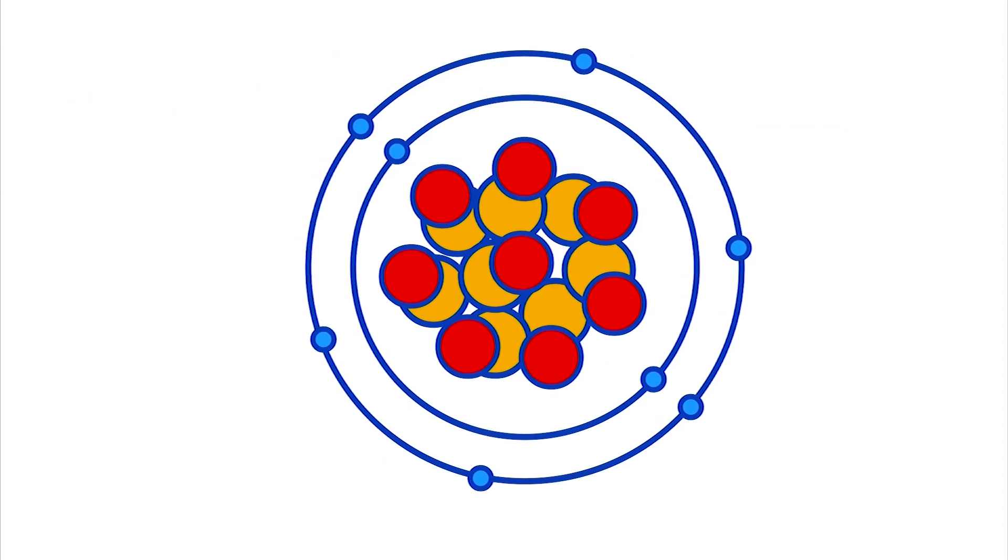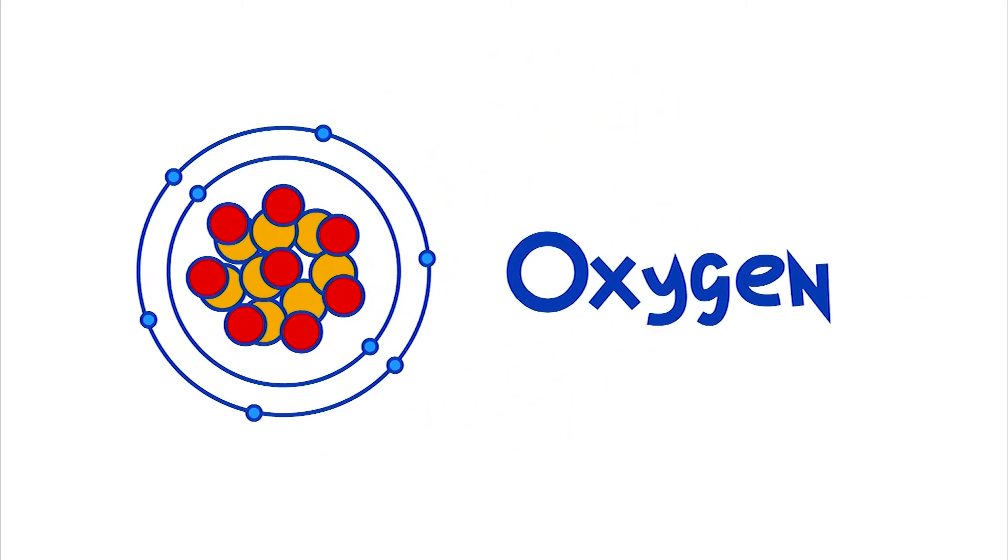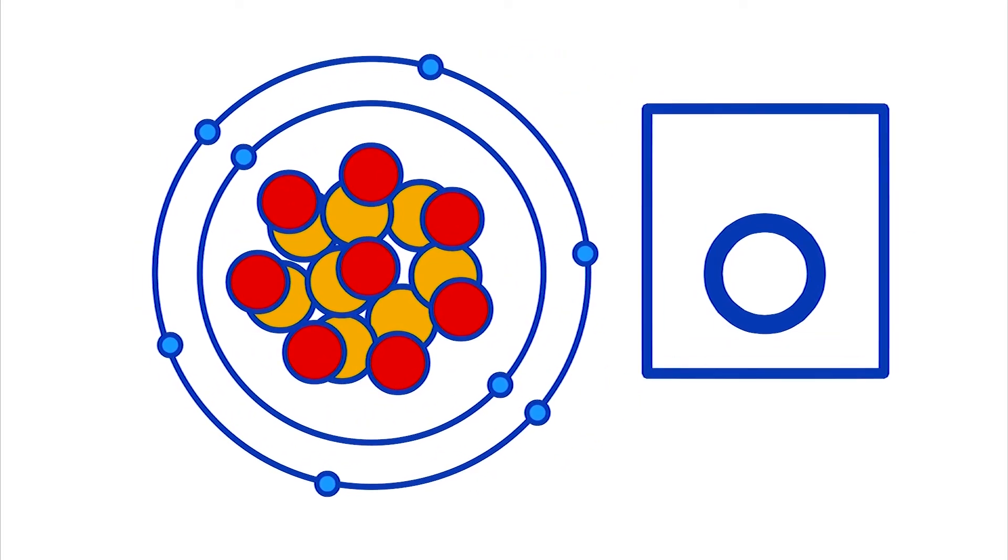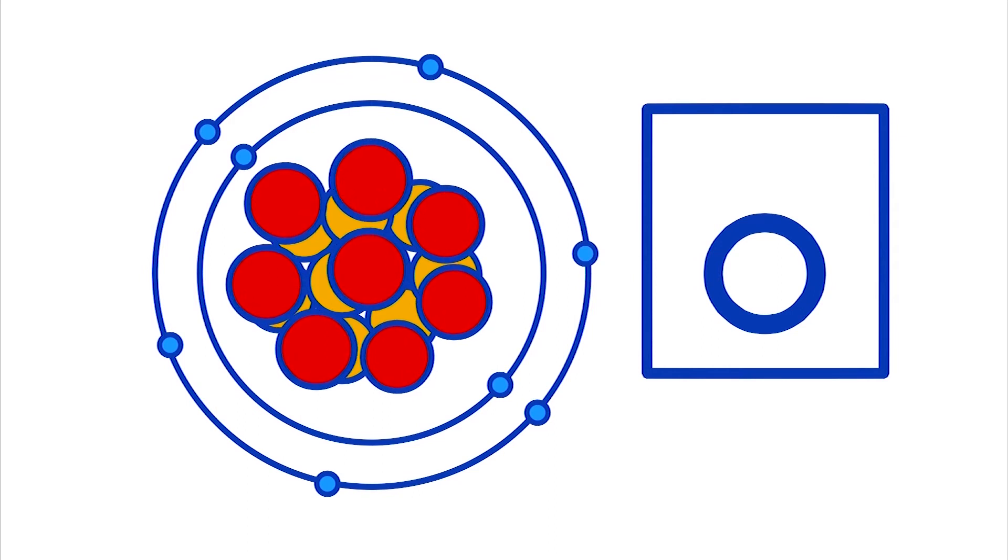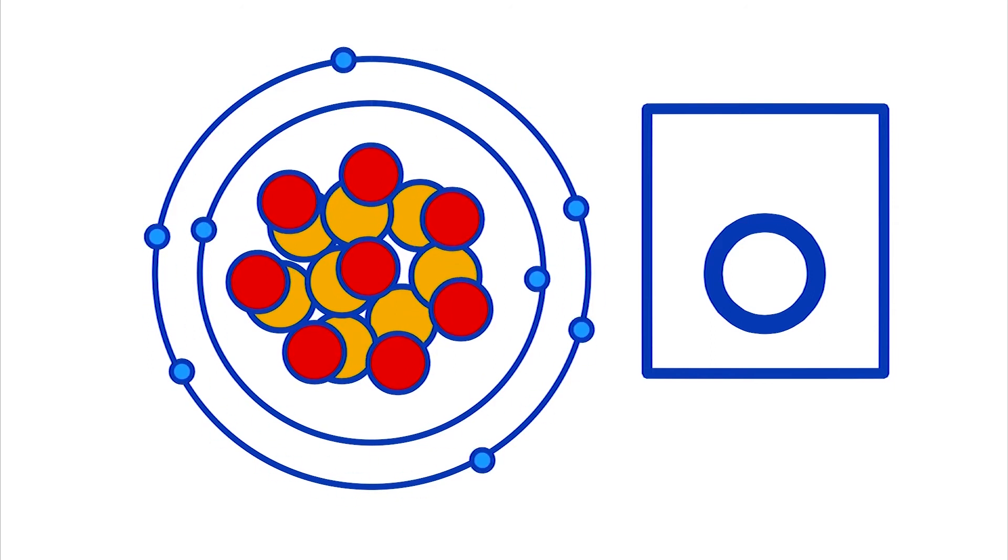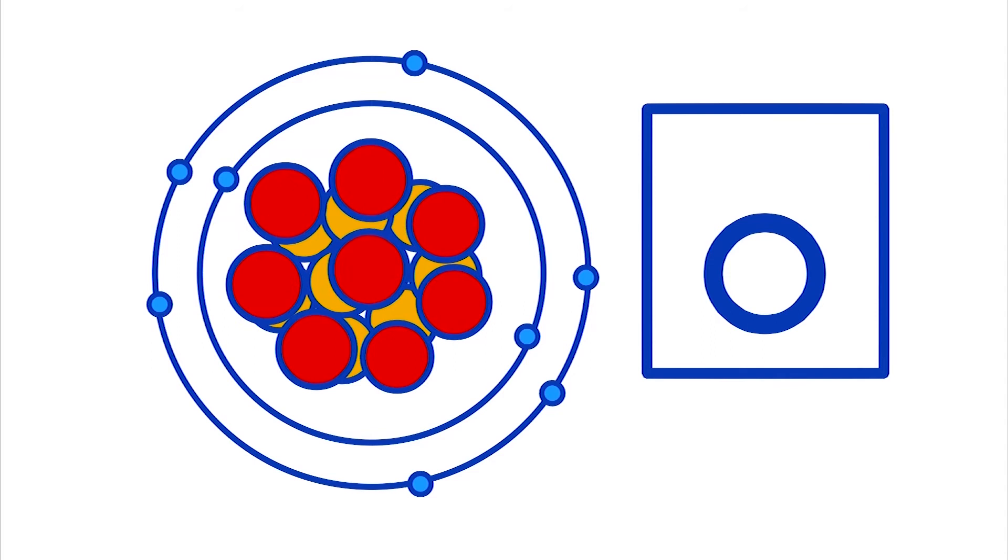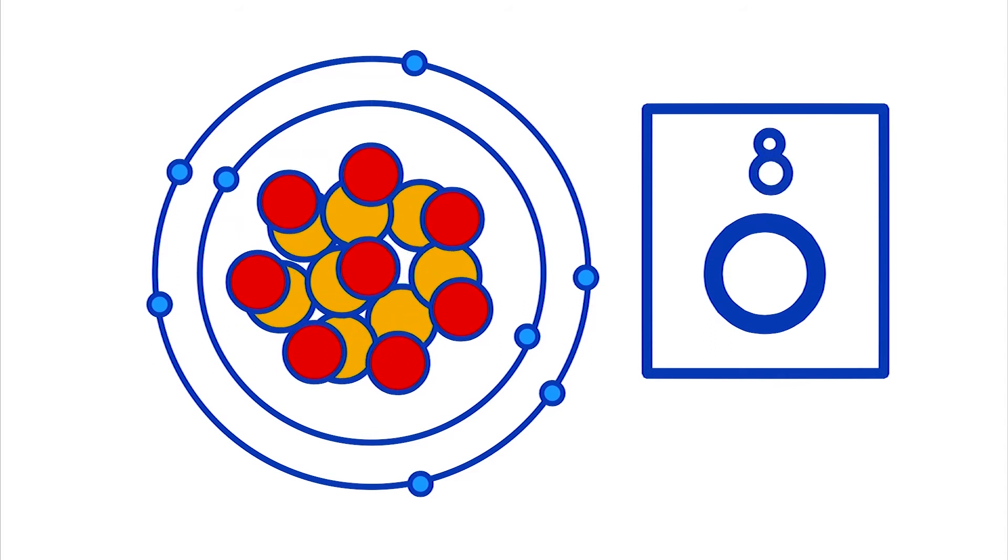This other chemical element is also a gas and it's called oxygen. The oxygen atom is somewhat different from hydrogen because it's composed of eight protons at its nucleus and consequently has eight electrons spinning around. So if oxygen has eight protons in the nucleus its atomic number is eight.